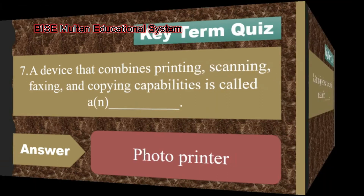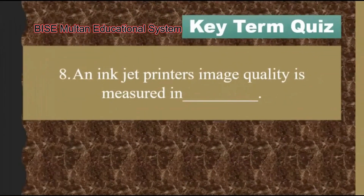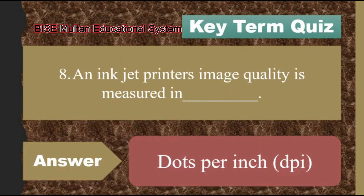Question number 8. An inkjet printer's image quality is measured in blank. The answer is dots per inch, or DPI.